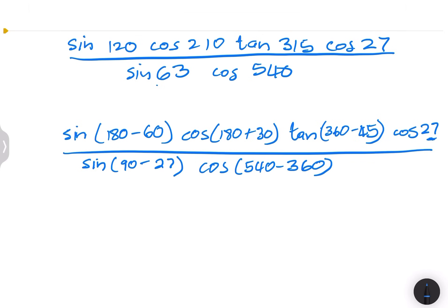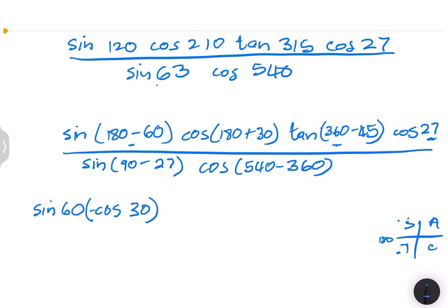Now let's try and use reduction formulae here. So we're going to say sine of 180 minus 60. Using the CAST diagram — 180 minus 60 is in the second quadrant. How is sine in the second quadrant? Sine would be positive. So this would be sine of 60. And we've got cos of 180 plus 30 — that's in the third quadrant. How is cos in the third quadrant? That would be negative. So this would be negative cos of 30 degrees. And we've got tan of 360 minus 45 — that's in the fourth quadrant. How is tan in the fourth quadrant? It's also negative. So that would be negative tan of 45.